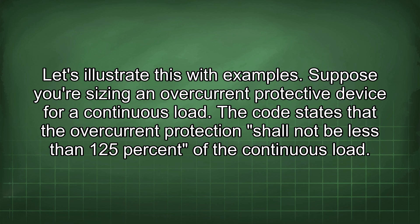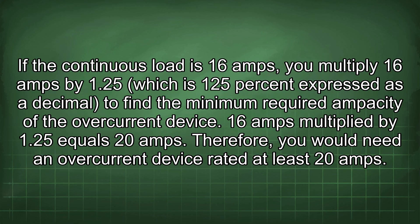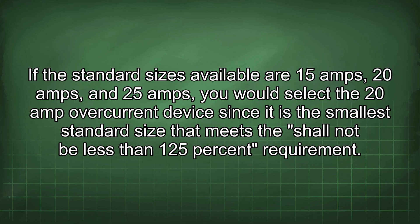Suppose you're sizing an overcurrent protective device for a continuous load. The code states that the overcurrent protection shall not be less than 125% of the continuous load. If the continuous load is 16 amps, you multiply 16 amps by 1.25 (125% expressed as a decimal) to find the minimum required ampacity: 16 amps × 1.25 = 20 amps. You would need an overcurrent device rated at least 20 amps. If standard sizes available are 15 amps, 20 amps, and 25 amps, you would select the 20 amp device.